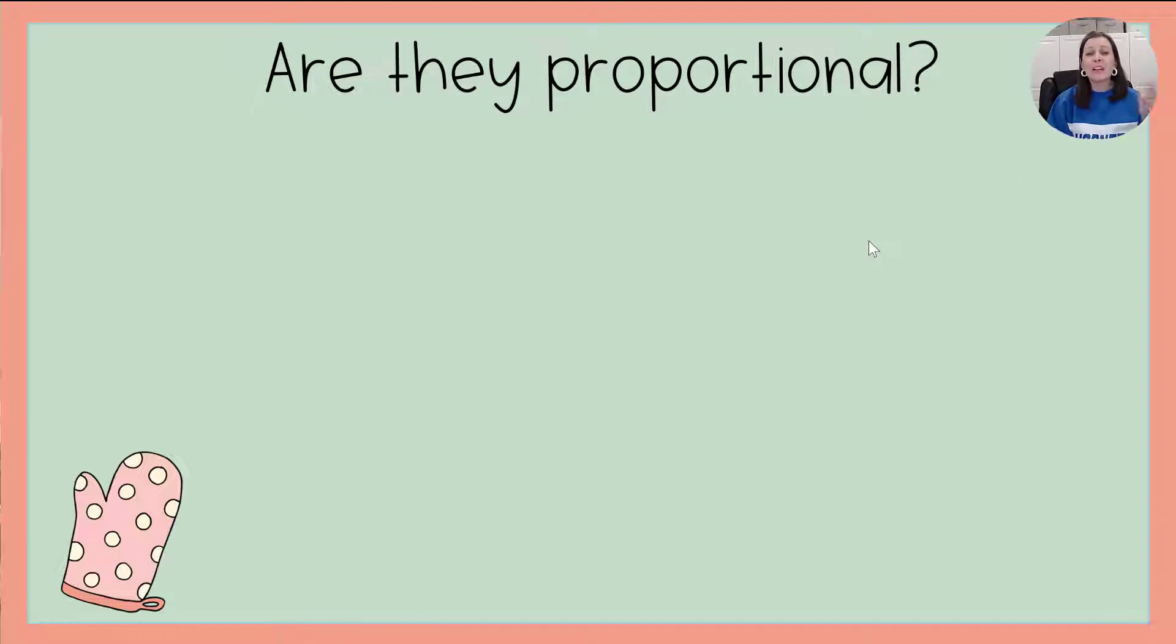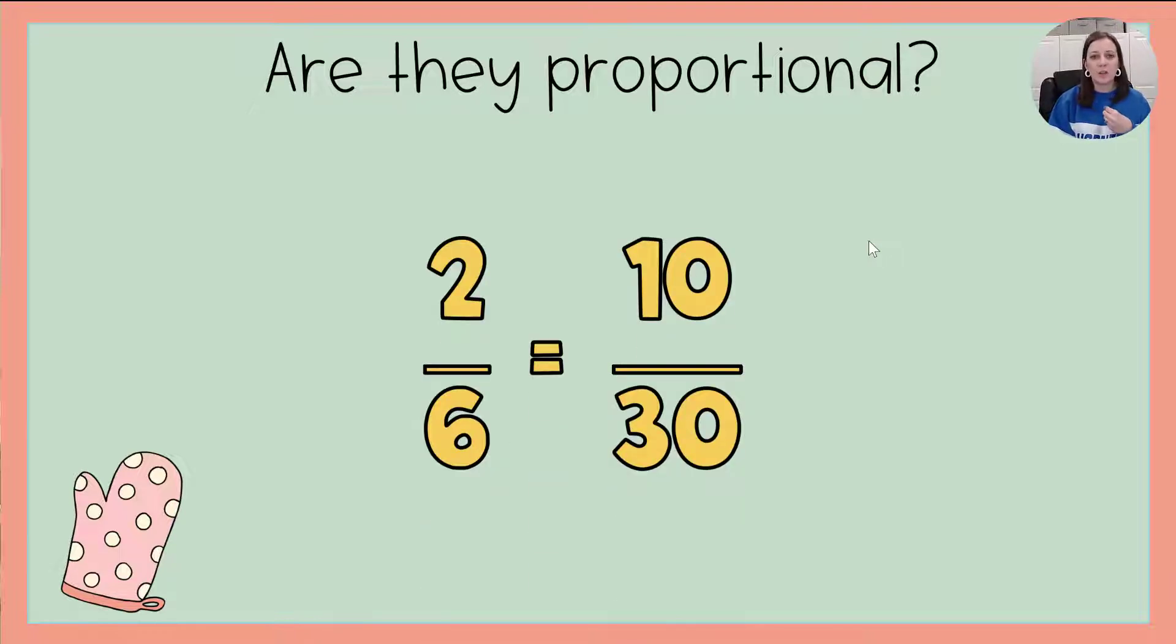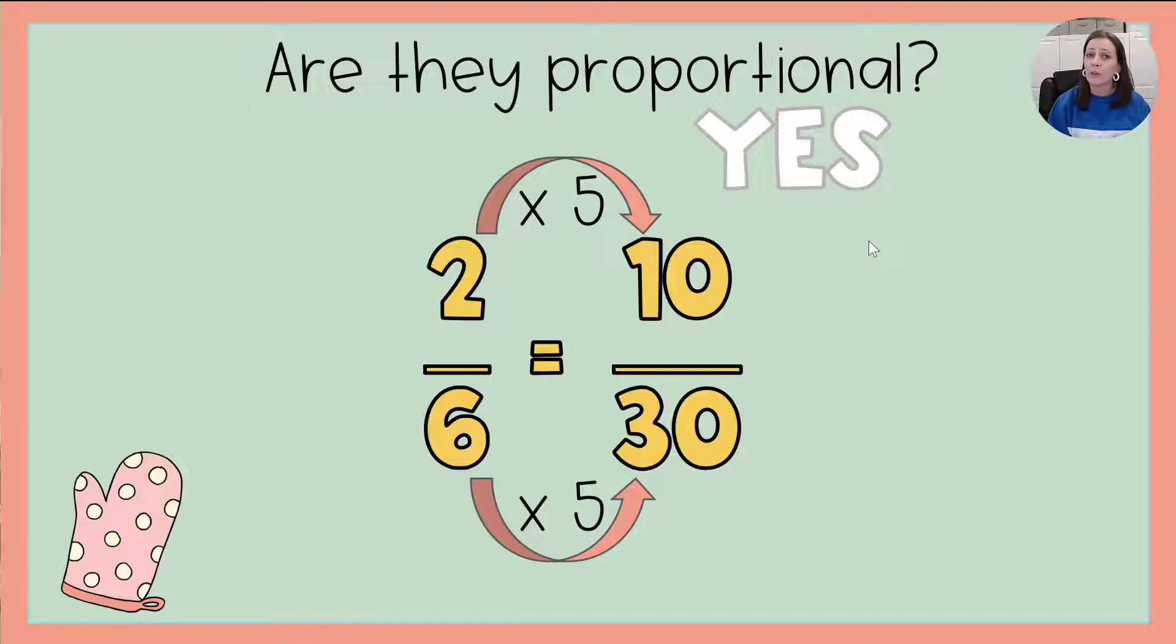Are they proportional? That's the question we're going to take a few minutes to practice answering. Let's take a look at this first set of ratios, 2 to 6 and 10 to 30. Well we can look at this and say okay I know that I can say 2 times 5 to get 10 and I can also say 6 times 5 to get 30. Since I multiplied those both by the same number, yes these are proportional.